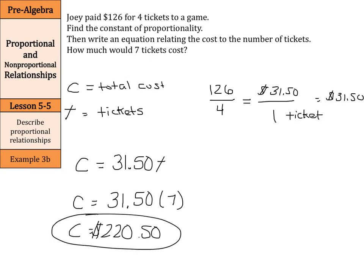We started by setting our variables of cost and tickets. We used our $126 for four tickets to come up with how much one ticket cost, and that's our constant of proportionality. We set up an equation saying our total cost is going to equal that constant times the number of tickets. We substituted in the seven for our tickets, multiplied and got our final answer.